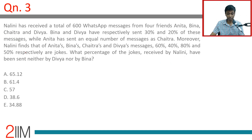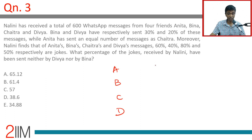Nalini has received a total of 600 WhatsApp messages from 4 friends: Anita (A), Beena (B), Chaitra (C), and Divya (D). Beena and Divya have respectively sent 30% and 20% of these messages, while Anita has sent an equal number of messages as Chaitra.